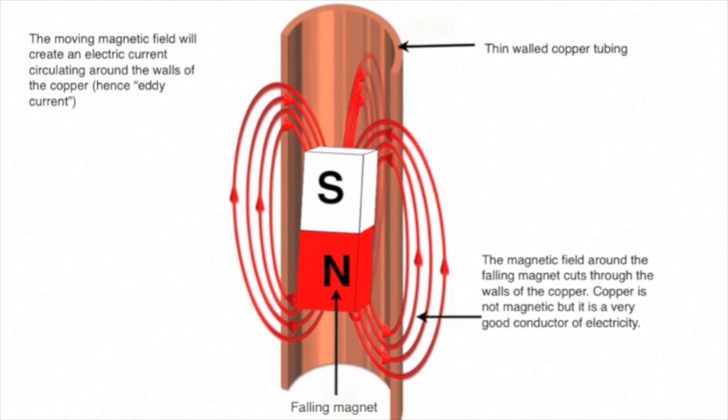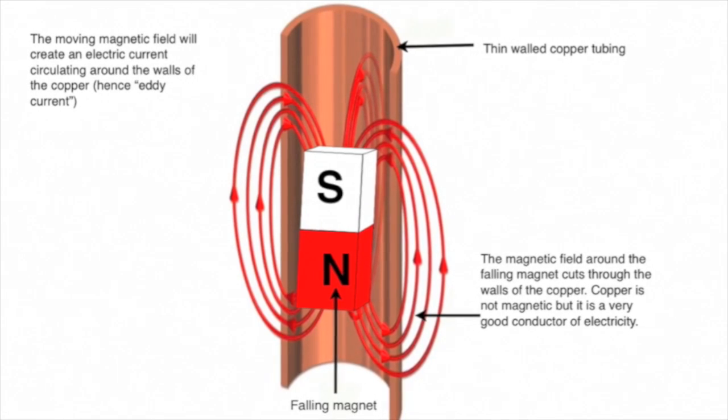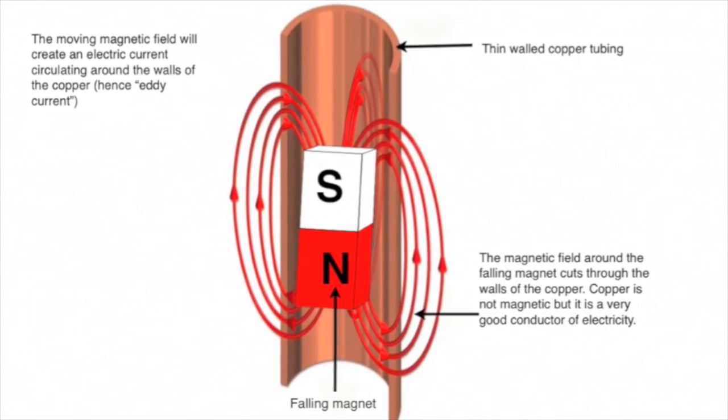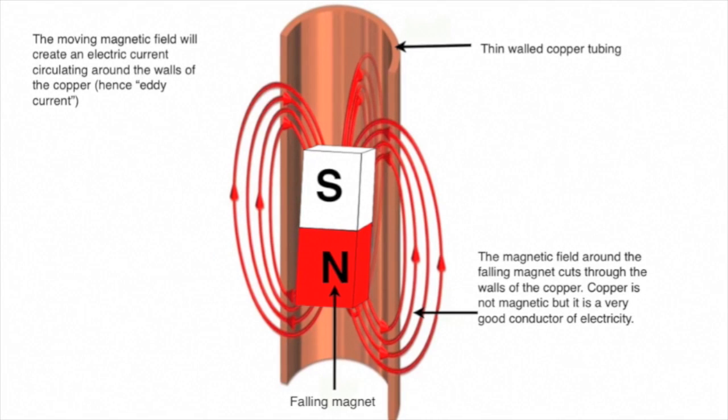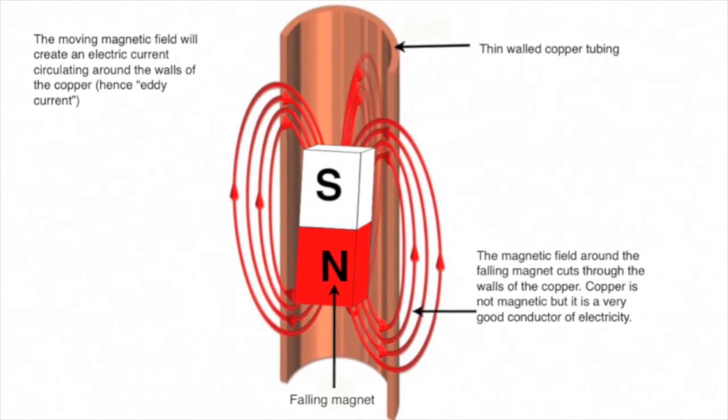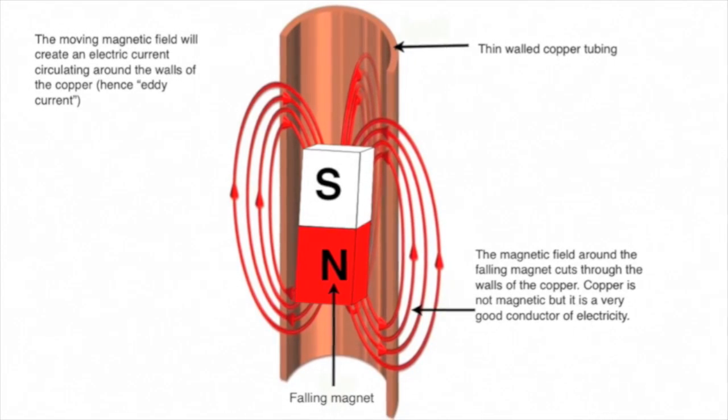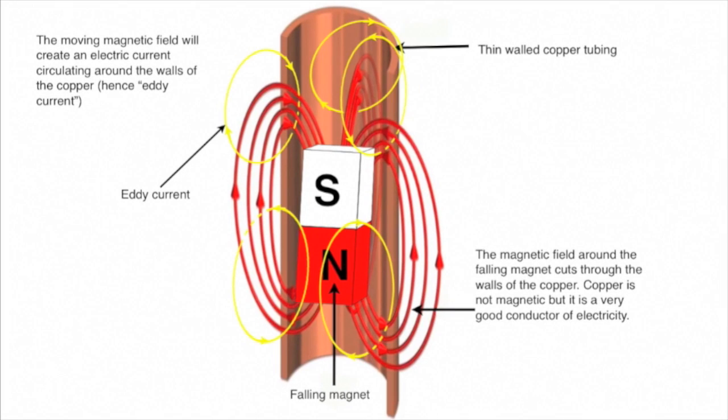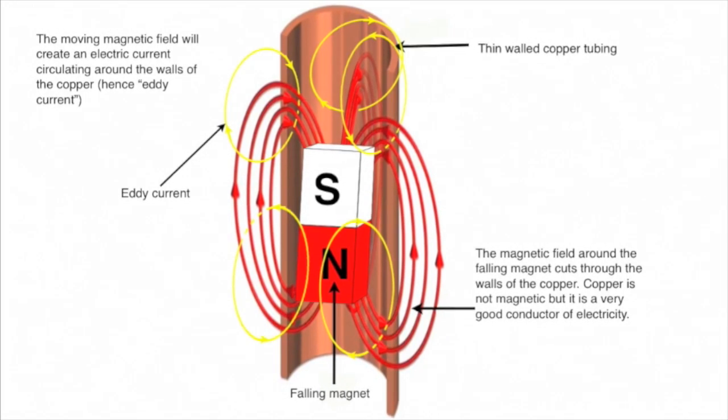And because it swirls around, it's called an eddy current. This eddy current produces a magnetic field of its own, and this magnetic field opposes the falling of the magnet. So the magnet loses kinetic energy, which is converted to electricity in the eddy current.